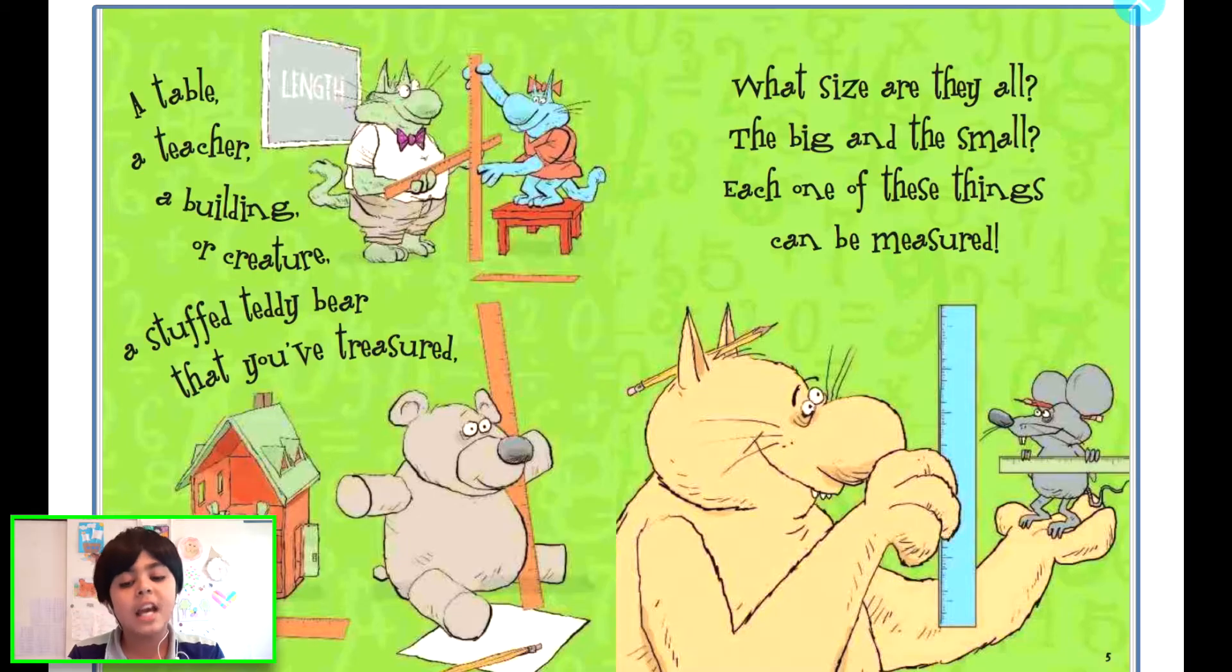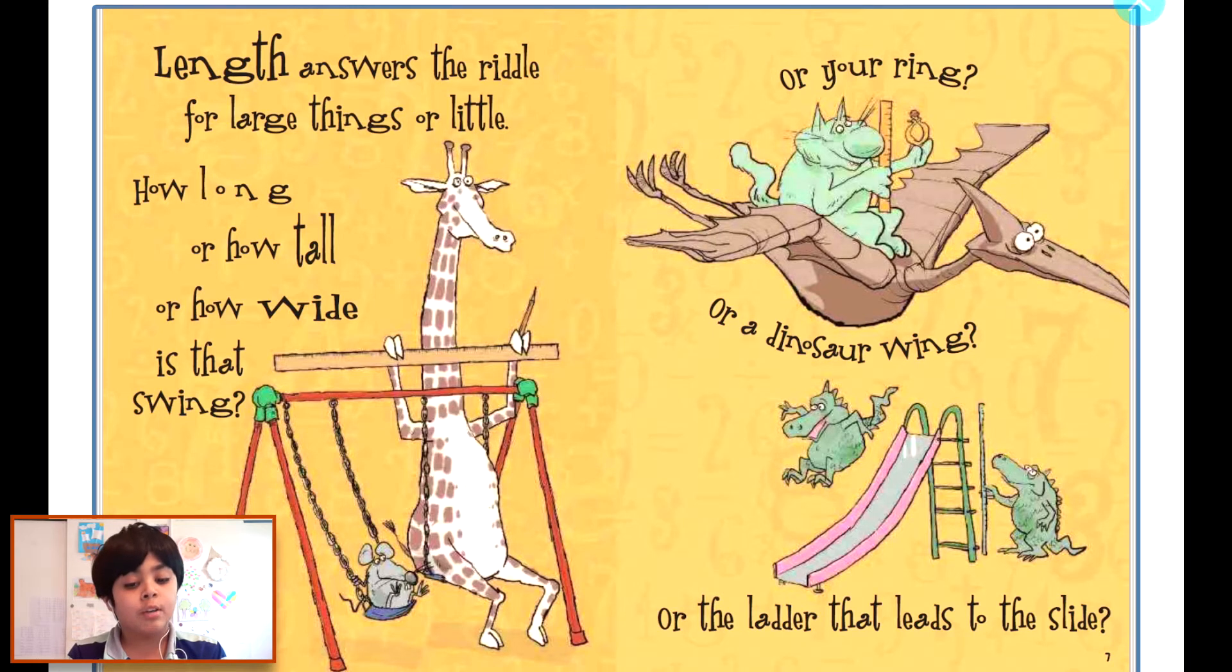Let's start. A table, a teacher, a building or creature, a stuffed teddy bear that you've treasured. What size are they all, the big and the small? Each one of these things can be measured. Length enters the riddle for large things or little. How long or how tall or how wide is that swing, or your ring, or a dinosaur wing, or the ladder that leads to the slide?